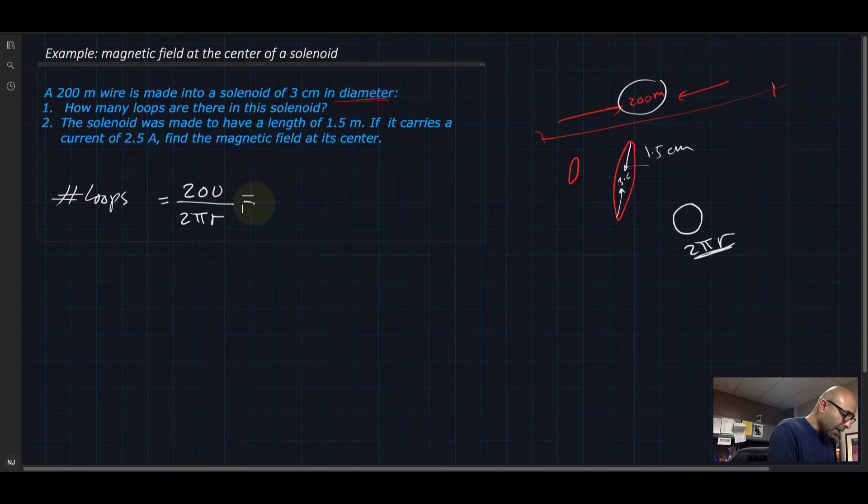If I do that correctly, you have to put r as 1.5 times 10 to minus 2 meters. If I do this correctly, I will get 2,122 loops.